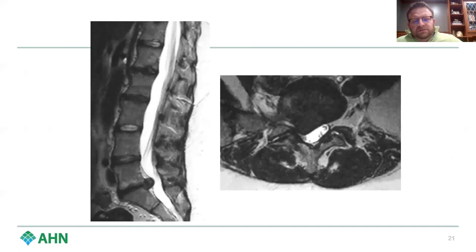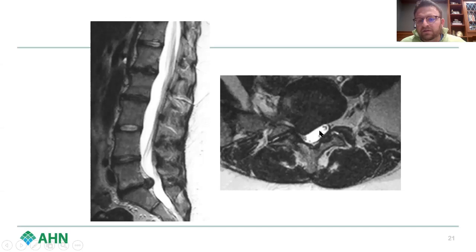Here we are back to our picture of an L5-S1 disc herniation. You can see why this leads to compression of the traversing nerve root. Looking at the axial image, on the left side you can see the traversing nerve root clearly, whereas on the right side it's obliterated — ultimately leading to compression of that traversing nerve root.